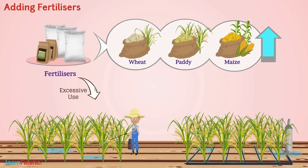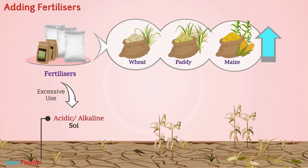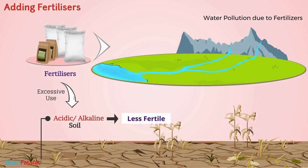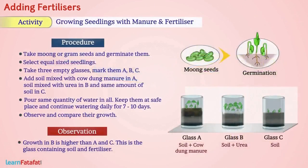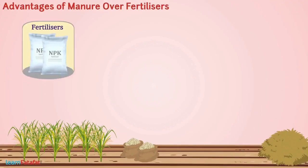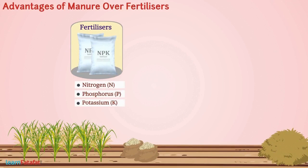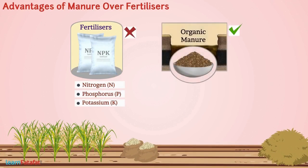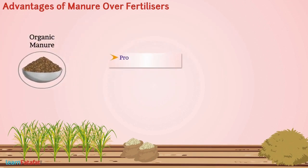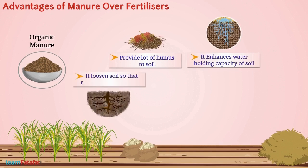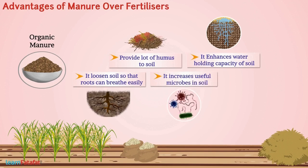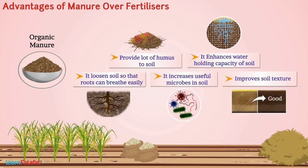However, excessive use of fertilizers makes soil acidic or alkaline, reducing soil fertility. Fertilizers also cause water pollution by entering rivers from factories or with rainwater from fields. Even though fertilizers are rich in nutrients, we should encourage organic manure because it provides humus, enhances water holding capacity, loosens soil for easy root breathing, increases useful microbes, and improves soil texture. It is therefore recommended to use organic manure for crop production.